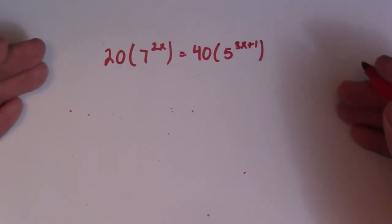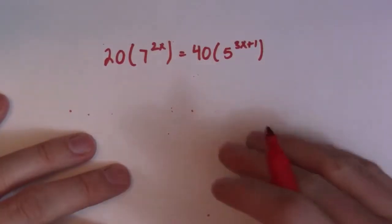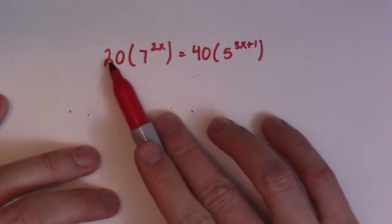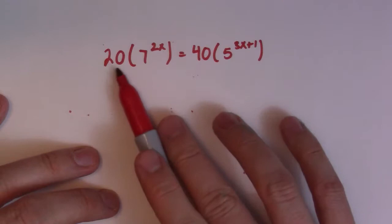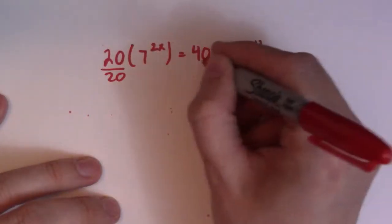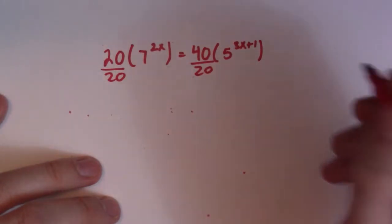There's no common base, so that means basically that we have a lot of work on our hands. So, first thing I usually like to do, if there's coefficients involved here, numbers out front of my exponentials, I'd like to just divide by at least one of them. So I divide both sides by 20.